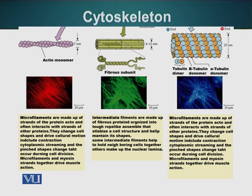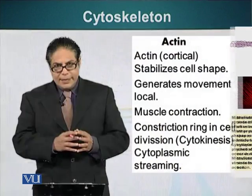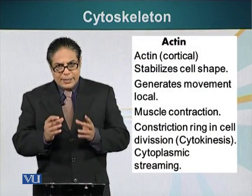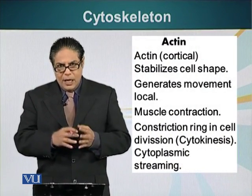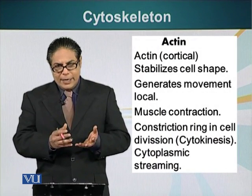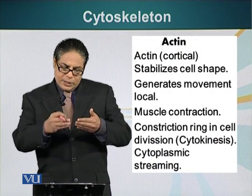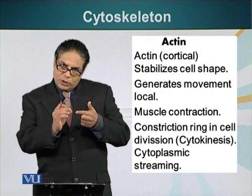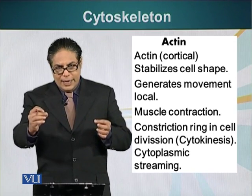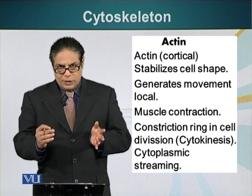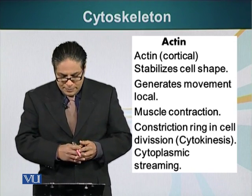We will first look at actin filaments. As we also saw in the animation previously, actin exists in two forms: G-actin and F-actin. Globular actin polymerizes — smaller units of actin attach to each other and they form these helical structures which are actin filaments.